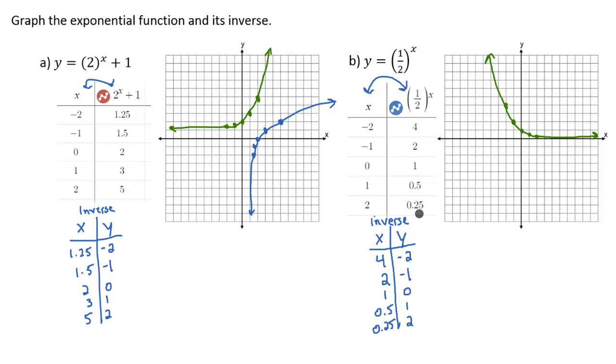Now I'm going to go ahead and plot those points. So I have 4, negative 2, it's going to be about right there. And then 2, negative 1 will be there. 1, 0, about there. And 0.5, 1 will be about right here. And then 0.25, 2 is going to be right about there, almost on the y-axis, but not quite.